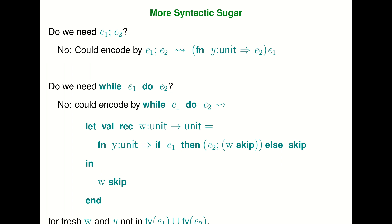The idea of syntactic sugar comes up over and over again. For instance, we introduced sequencing at the beginning of the course. Now that we have functions, we can encode sequencing using them as well: e1; e2 can be encoded as making e2 into a function that takes a unit argument and then is passed e1. So e1 evaluates to unit, passes it to a variable not in scope for e2, and then we evaluate e2. Similarly, while loops can be encoded using recursive definitions now that we have functions and recursion.